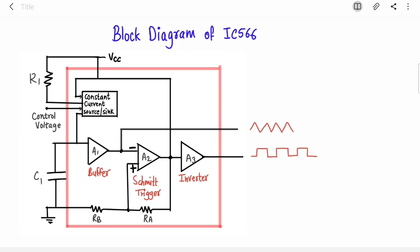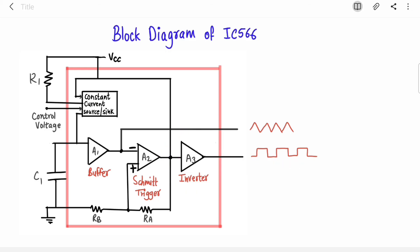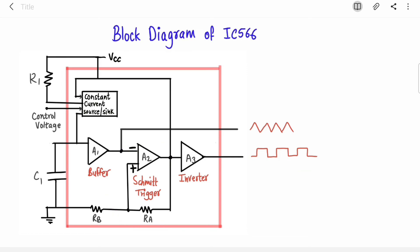There are three amplifiers inside the IC: a buffer, a Schmitt trigger, and an inverter. The capacitor voltage is collected through the buffer — one path goes directly to the triangular wave output, and the other feeds into the Schmitt trigger. The output of the Schmitt trigger is inverted by the inverter to produce the square wave output.